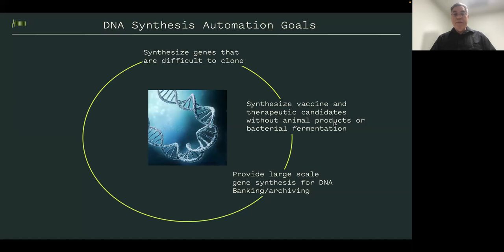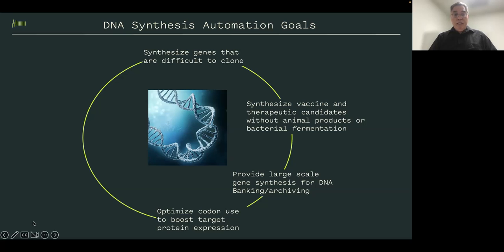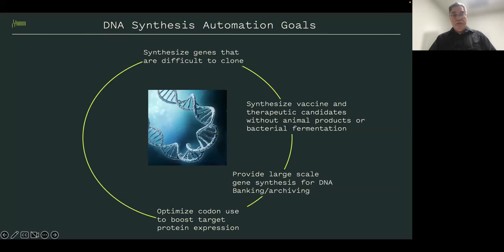Companies like banks and iCloud archiving companies are looking at DNA as the means to store data long-term. We also want to optimize codon use to boost targeted protein expression — making the messenger RNA go through the ribosome as fast as possible to express more protein faster. Because there are redundancies, you may want to try multiple variants of your DNA, which gets translated into messenger RNA for translation.